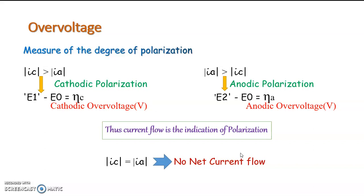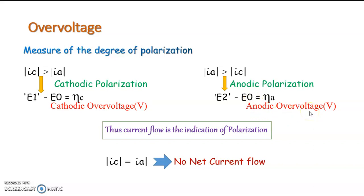The value or measure of polarization is expressed as overvoltage. It is the potential difference from the equilibrium value due to cathodic or anodic polarization. If the polarization is cathodic, the created overvoltage is known as cathodic overvoltage and it will be negative. If it is anodic polarization, the extra potential is known as anodic overvoltage and it is greater than the equilibrium potential.